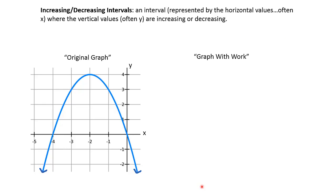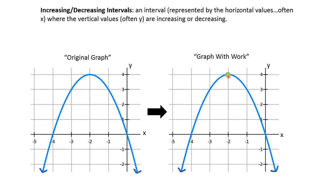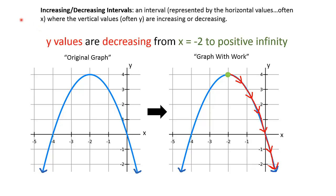Here's another example. We have our original graph, but as we go from this point, we want to show where it's decreasing. At x equals negative 2, we can see that our graph is going down, so it's decreasing. We can say the y-values are decreasing from x equals negative 2 to positive infinity. As we move from left to right, we're going down here, but it starts at negative 2. So interval notation here would reflect that decreasing interval.